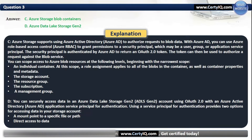Azure Storage supports using Azure Active Directory to authorize requests to blob data. With Azure AD, you can use Azure role-based access control to grant permissions to a security principal, which may be a user, group, or application service principal. The security principal is authenticated by Azure AD to return an OAuth 2.0 token, which can then be used to authorize a request against the blob service. You can scope access to Azure Blob resources at the following levels: an individual container, the storage account, the resource group, and the subscription.